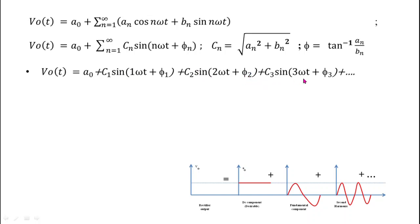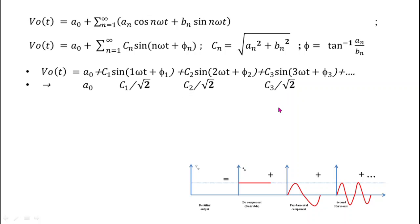The RMS value of the DC component is a₀. The RMS value of the fundamental sinusoidal component is c₁/√2. The RMS value of the second harmonic component is c₂/√2, and the RMS value of the third harmonic component is c₃/√2.